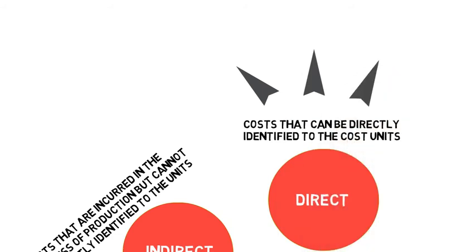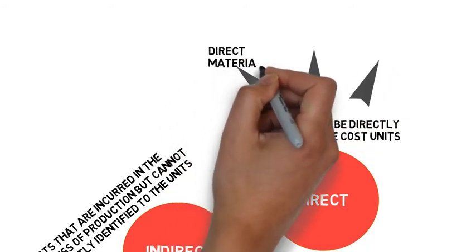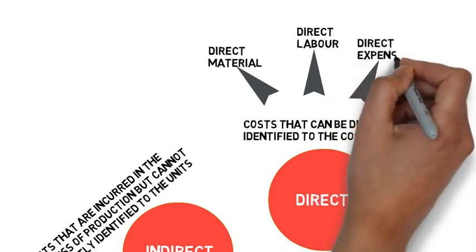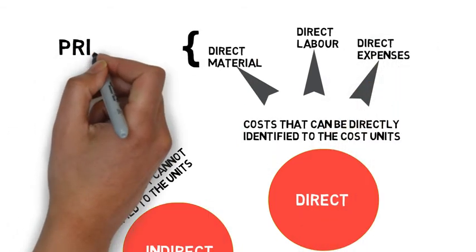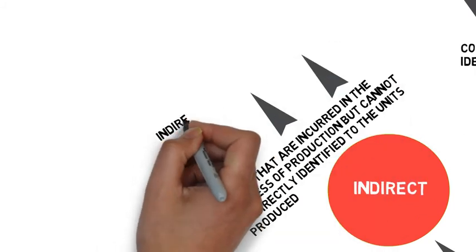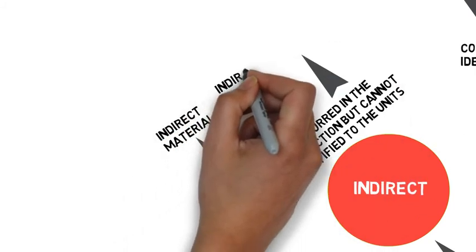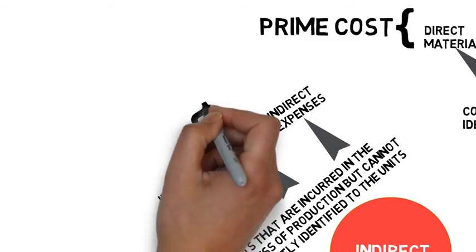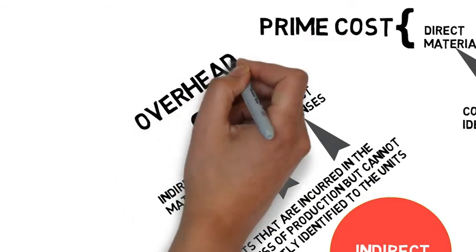Direct cost further divided into three, which is direct material, direct labor, and direct expenses. These three are called prime cost. Indirect cost can also be divided into three, which is indirect material, indirect labor, and indirect expenses. These three are called overhead cost.